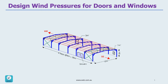In this section we want to look at the design wind pressures for doors and windows. We have a big roller door with 20 square meter area, also another door with 3 square meter, and a small window with 1 square meter area.